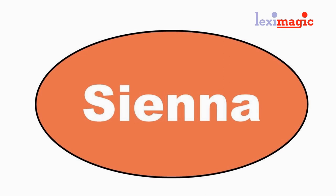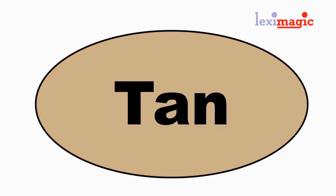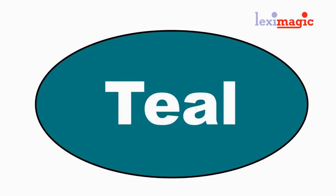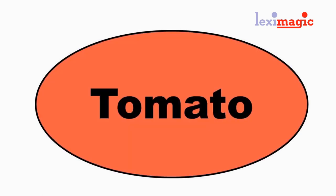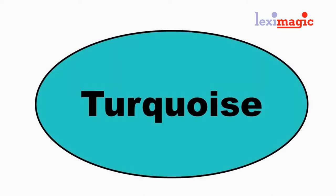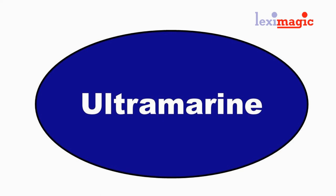Sienna: a light reddish brown. Tan: a yellowish brown. Teal: a dark somewhat bluish green color. Tomato: a bright shade of red. Turquoise: a pale greenish blue. Ultramarine: a brilliant pure dark blue, or slightly purplish blue.